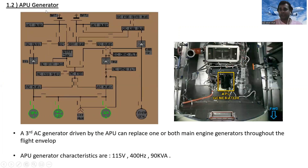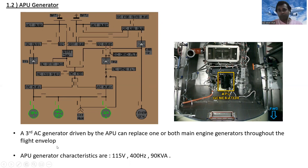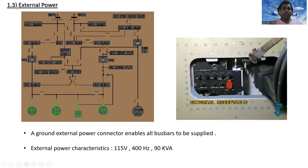Next is the APU generator. A third AC generator driven by the APU can replace one or both main engine generators throughout the flight envelope. APU generator characteristics are 115 volts AC, 400 hertz, and 90 kilowatt amperes.